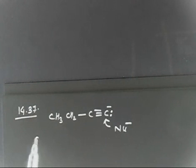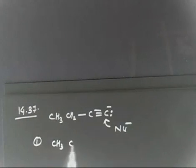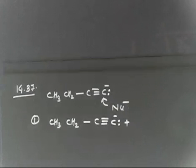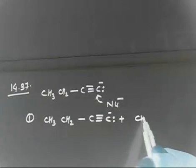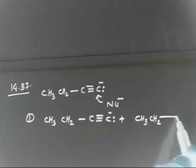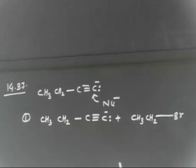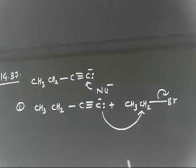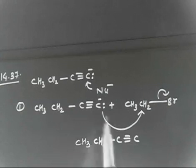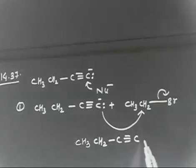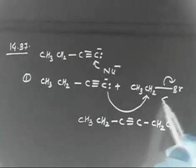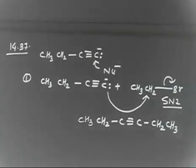For the first reaction, we have CH3CH2C≡C with a minus charge reacting with ethyl bromide, that is CH3CH2Br. The lone pair attacks the carbon and Br leaves. The product will be CH3CH2C≡C–CH2CH3. This is a nucleophilic SN2 reaction.